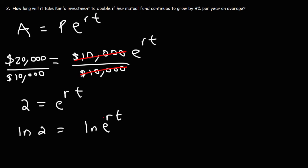A property of logs allows us to take the exponent and move it to the front. So we get ln 2 is equal to RT times the natural log of E. Now the natural log of E is equal to 1. So we have ln 2 is equal to RT.